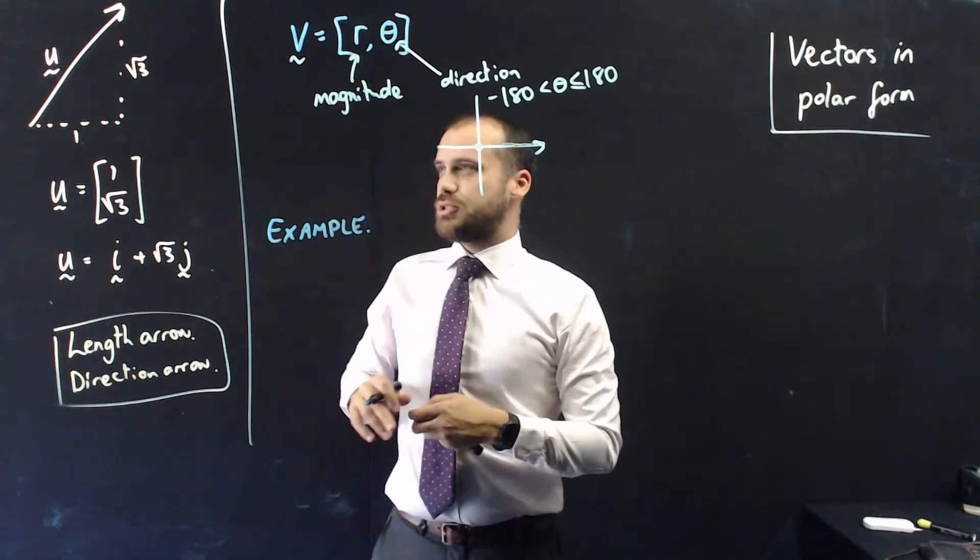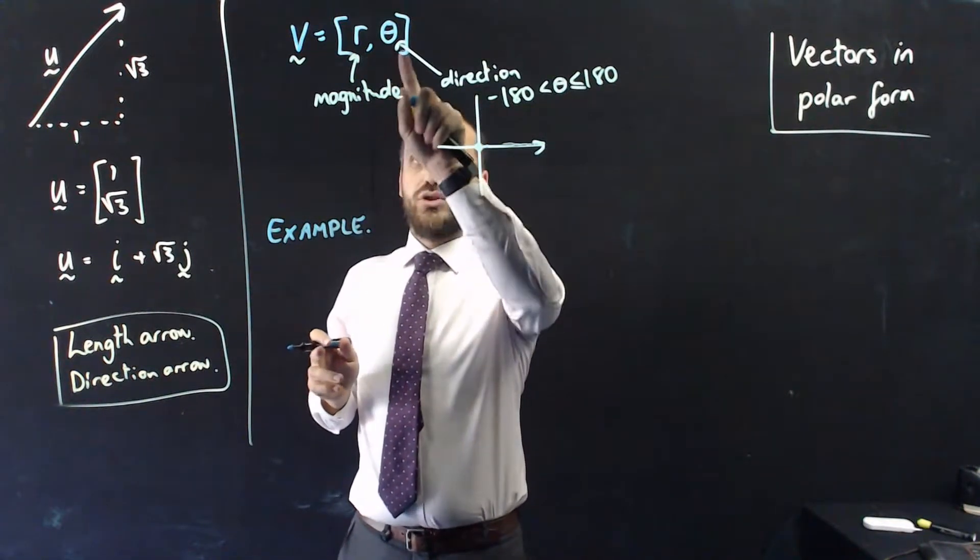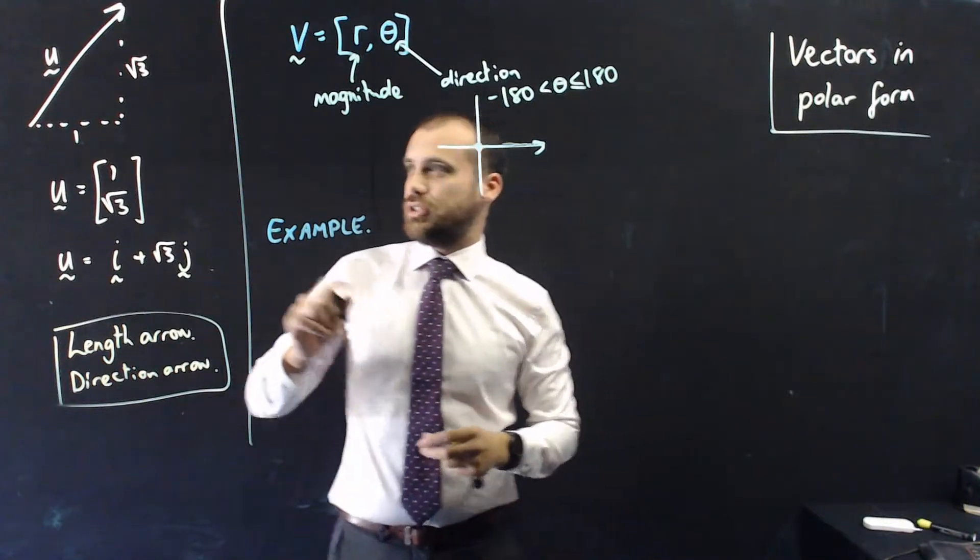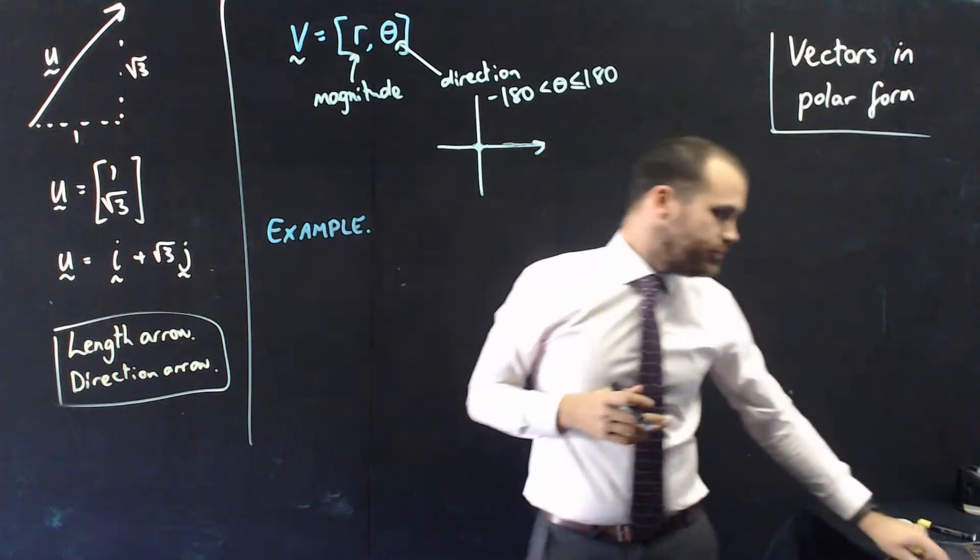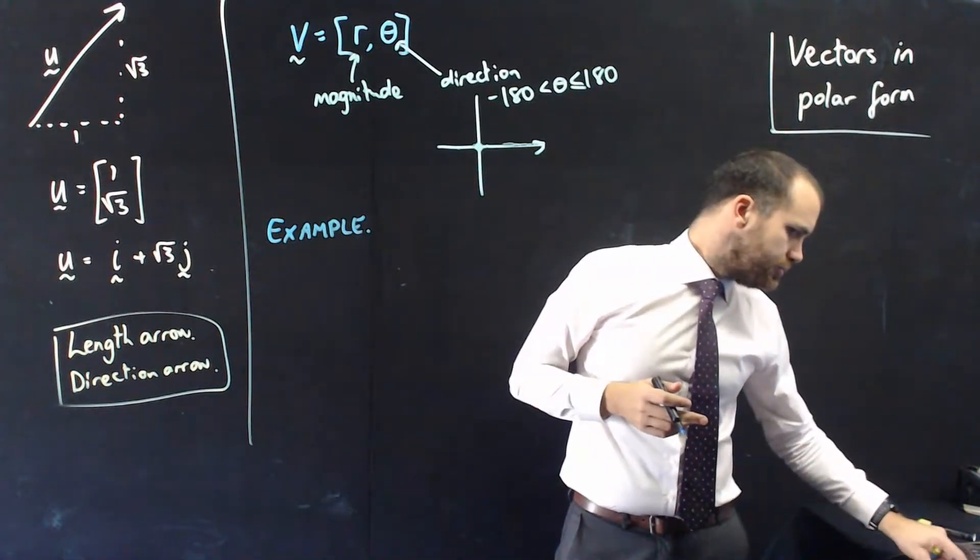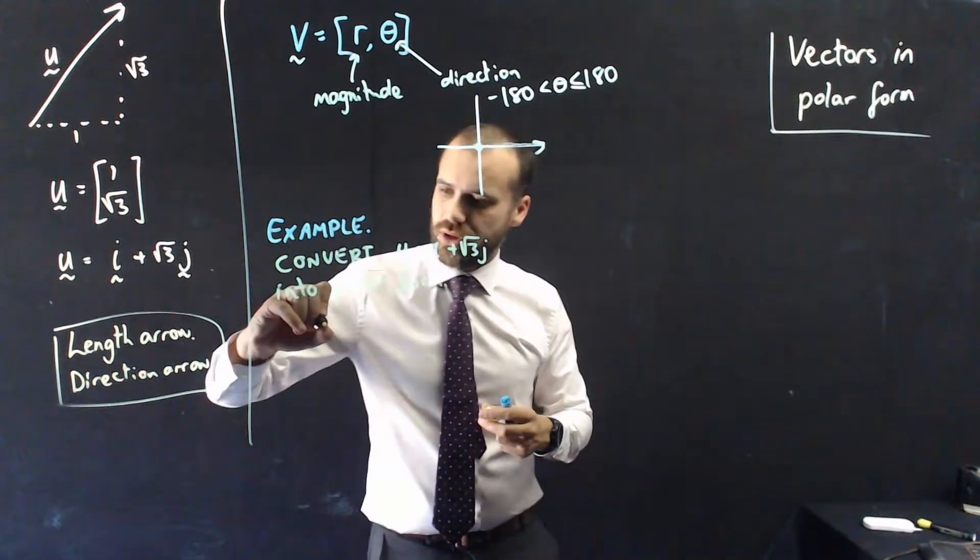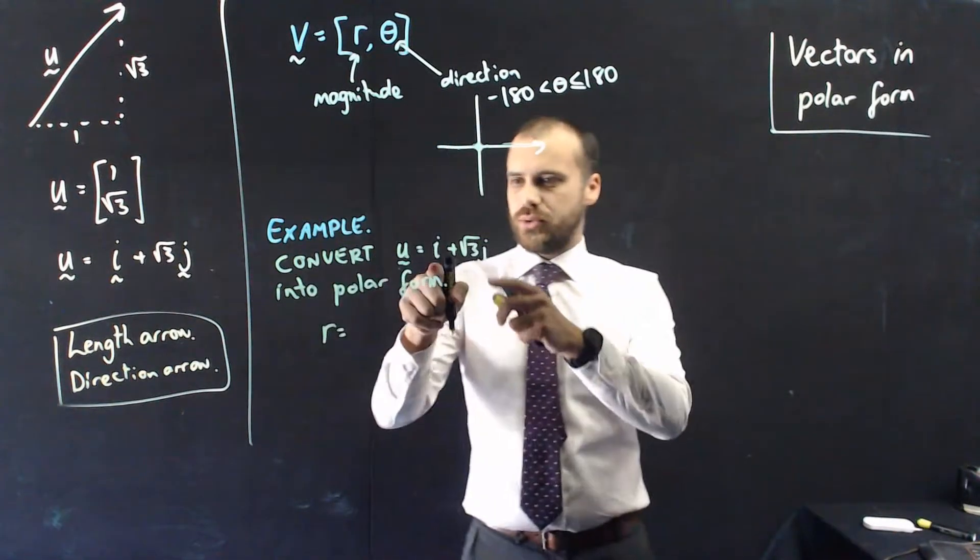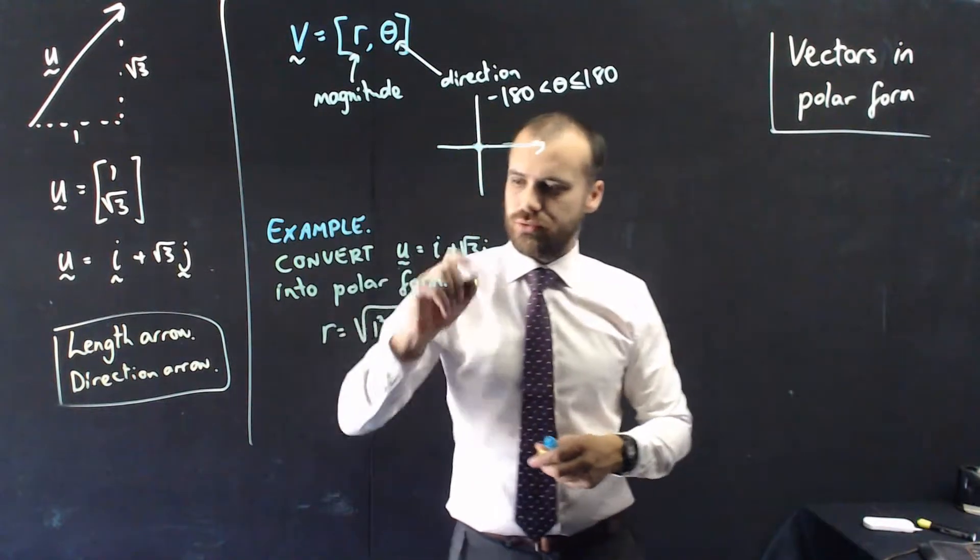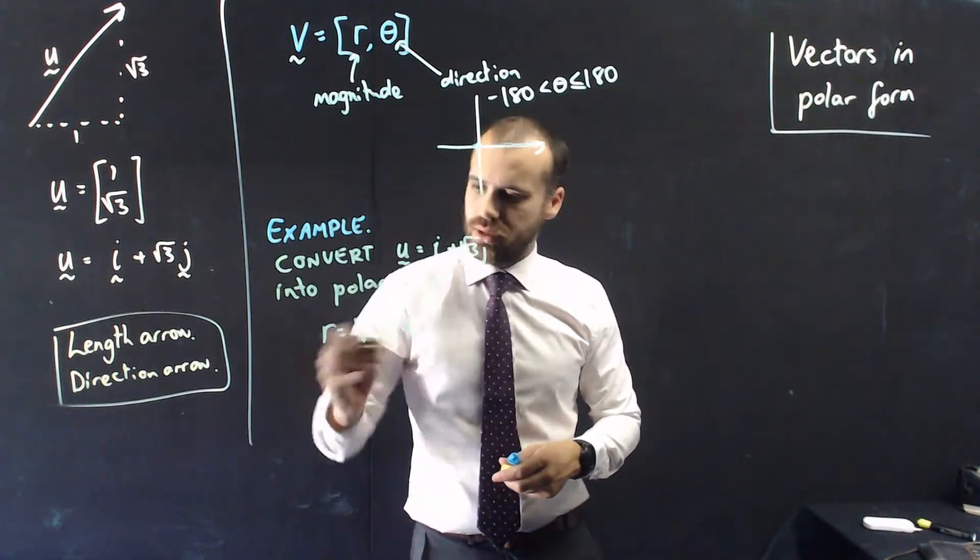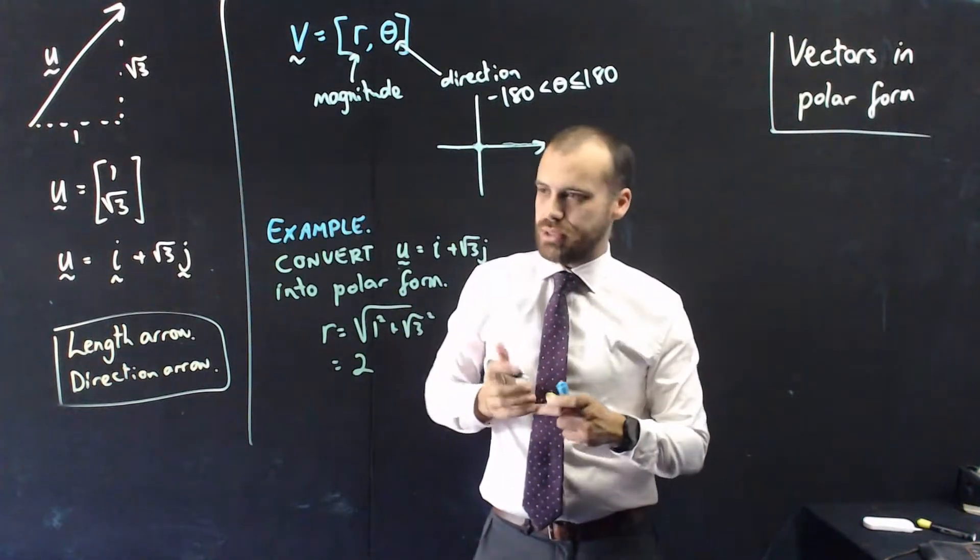If I want to express that in terms of magnitude and direction, so really I'm converting it from component form to polar form. So, if I want to convert it into polar form, I need to find a magnitude, so I'm going to say r is equal to the square root of 1 squared plus root 3 squared. That's going to be 2. So, that has a magnitude of 2, that's why I chose those numbers.